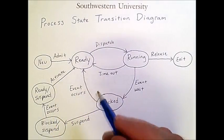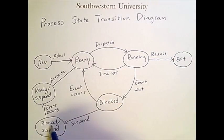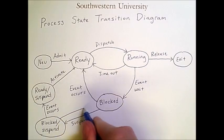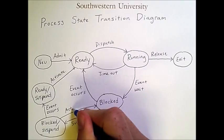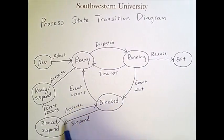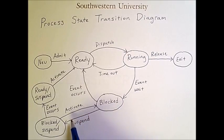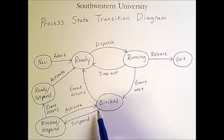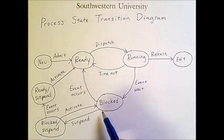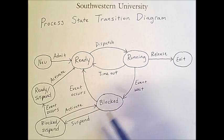There are some other transitions to be aware of. It's actually possible for a blocked-suspended process to be activated, putting it back in a blocked state. This is unusual because we are taking a process that cannot run and moving it from disk into main memory, taking up valuable memory space. The only reason to do this is if you have reasonable certainty that the event the process is waiting for is about to occur. You don't want a blocked process in main memory for long if it's just going to sit there preventing other processes from running.